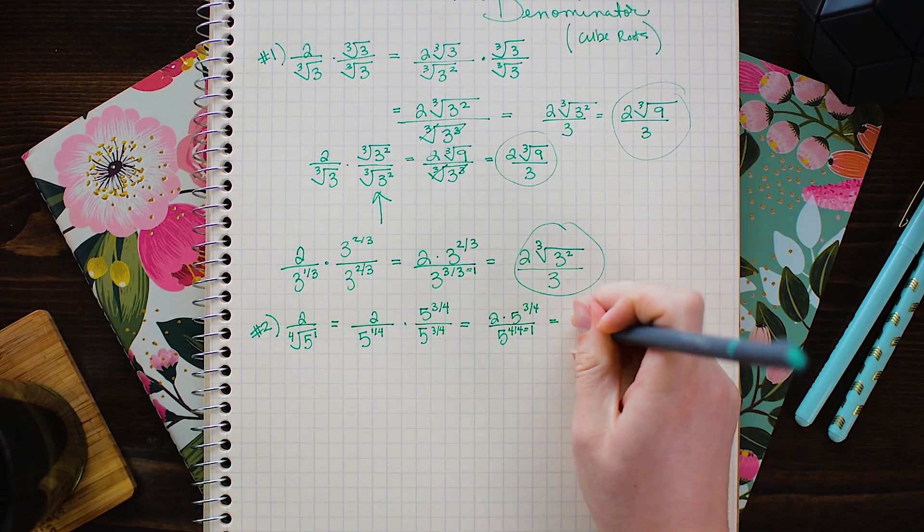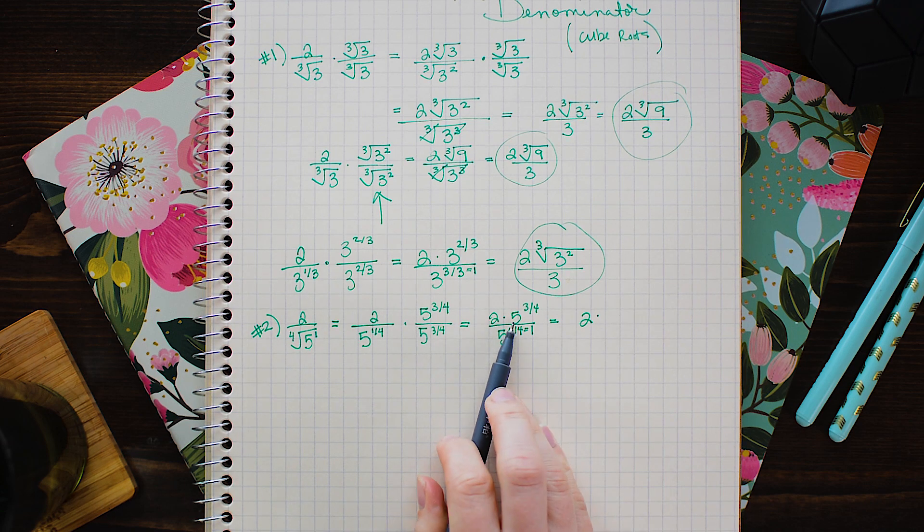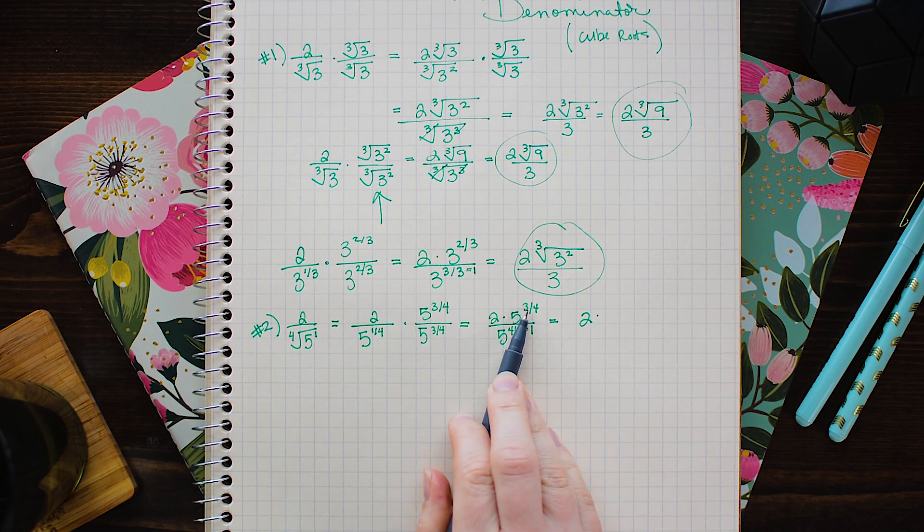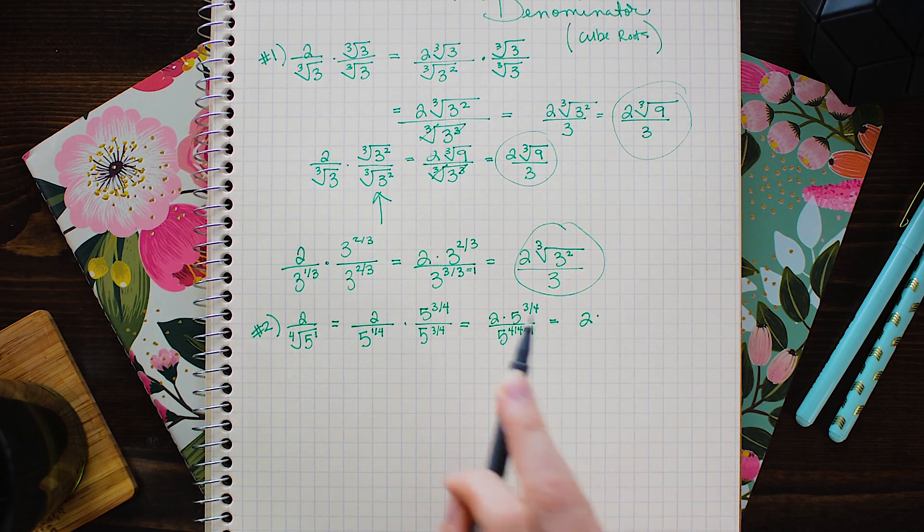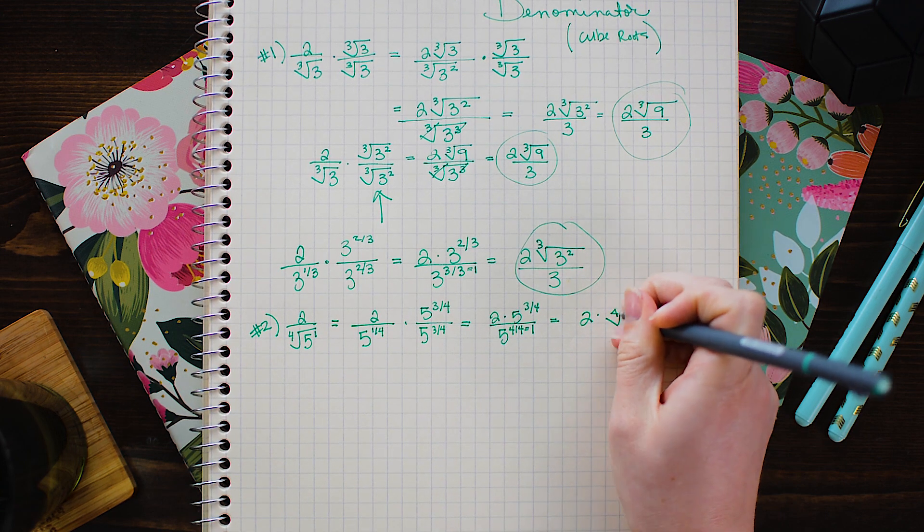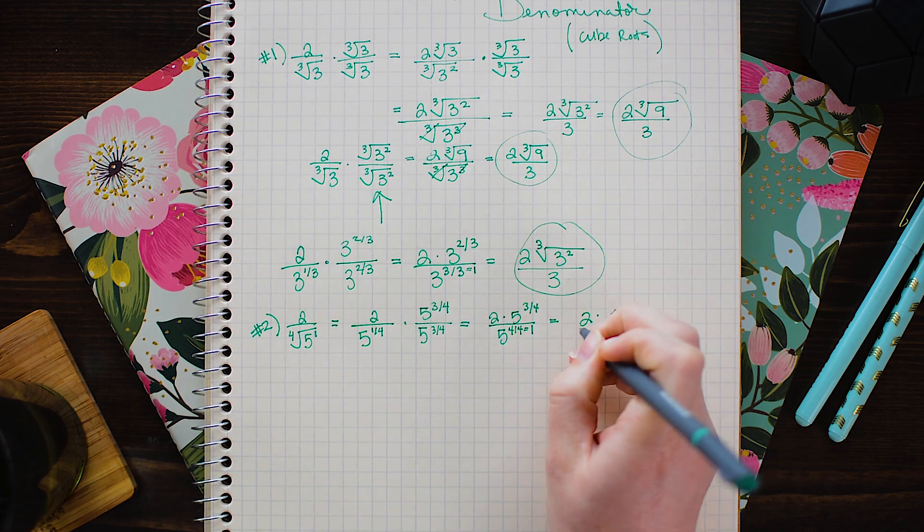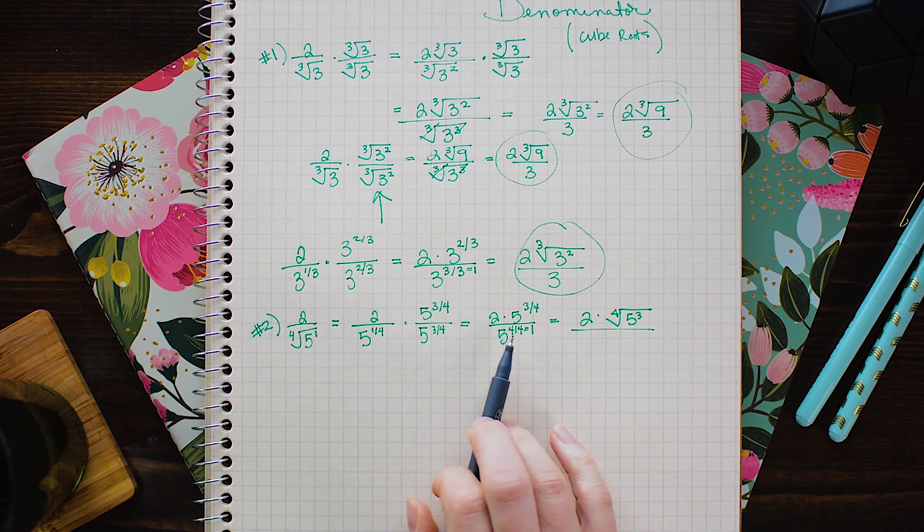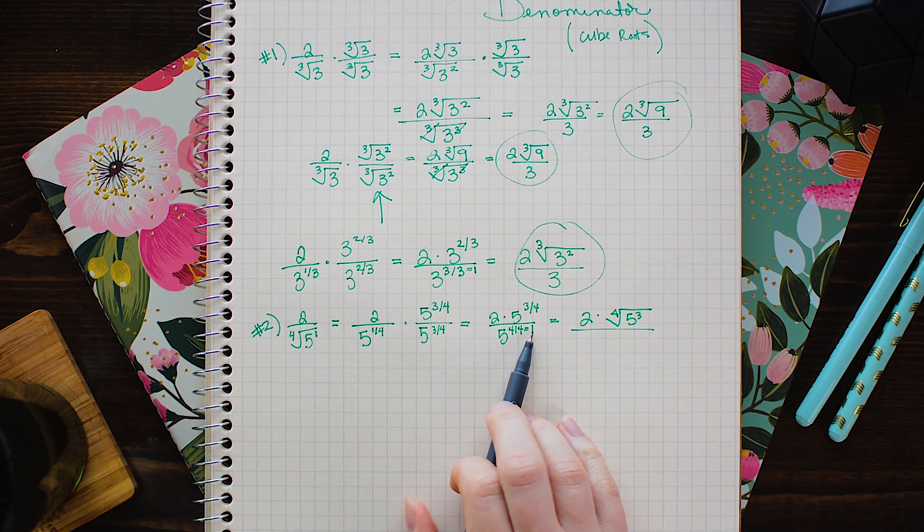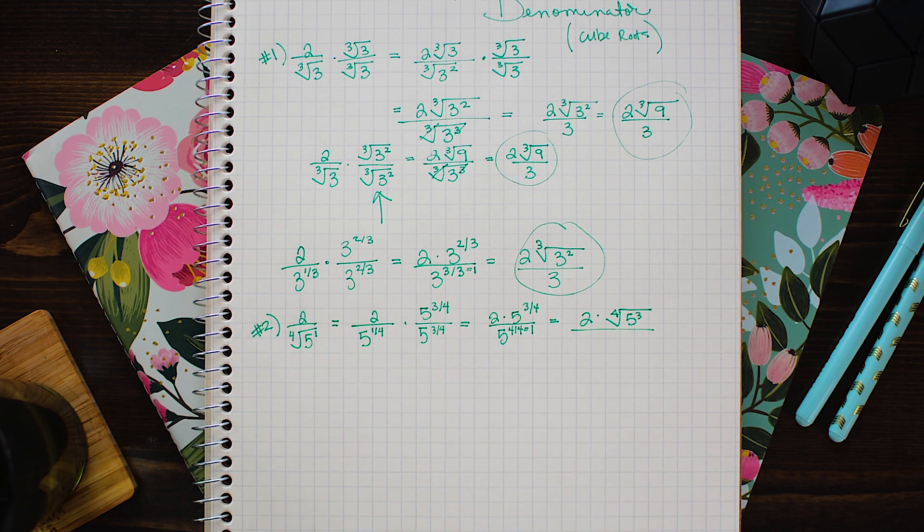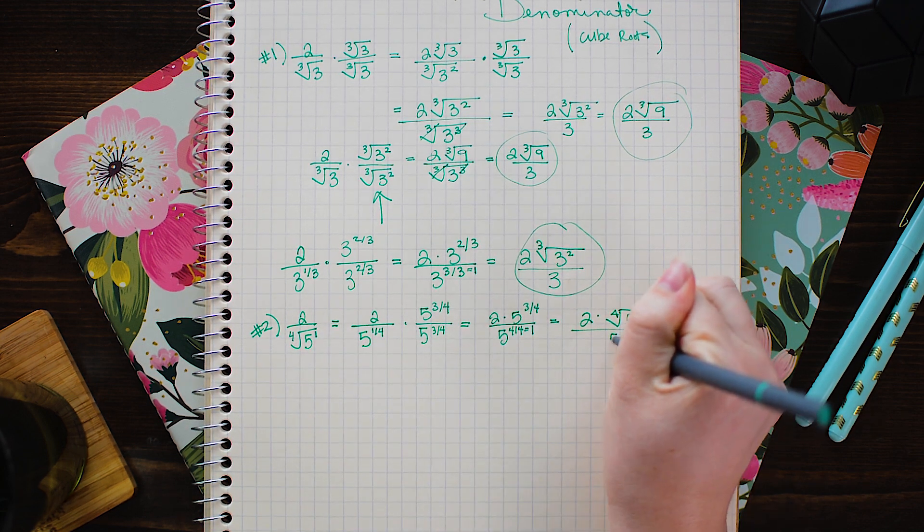So the last step is to go ahead and just rewrite this back in radical notation. So we have 2 times 5 cubed under a 4th root. So 4th root of 5 cubed. And on the bottom because 4 divided by 4 is 1 we just have 5 to the 1st power or simply 5.